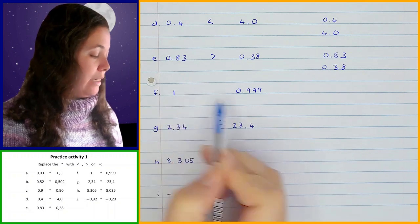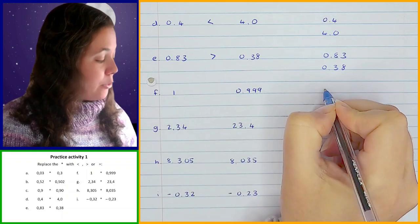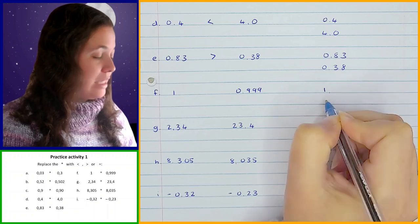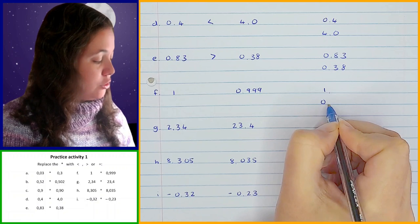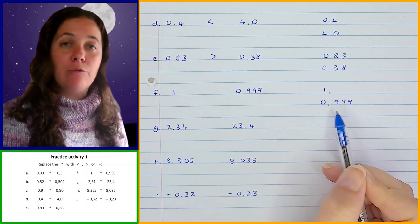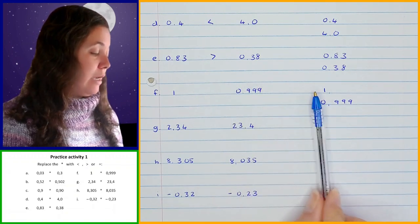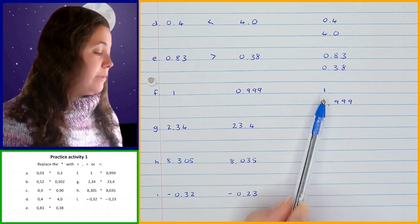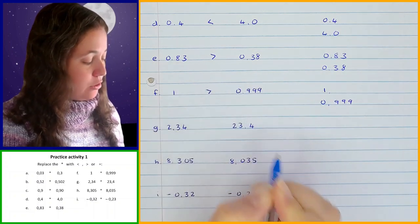Then I've got 1 and 0.9999. In the 1, you can't see the decimal point but remember the 1 is in the ones position and anything after that would be zeros. Over here I've got zero in my ones position and then 0.999. Now 0.999 might look bigger, but be careful — moving from left to right I first get to my ones, and 1 is greater than 0, which means that 1 is greater than 0.9999.